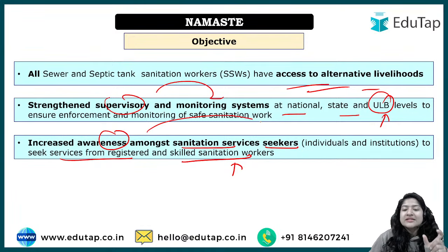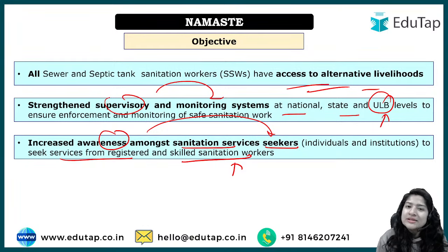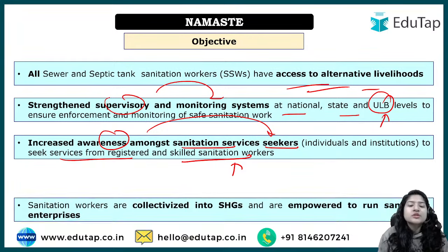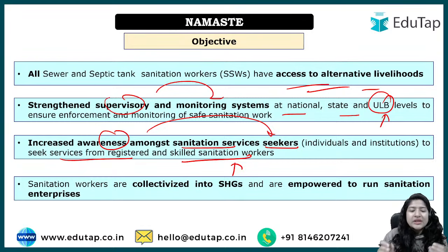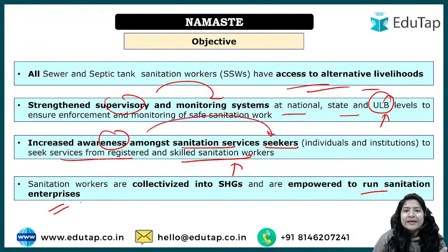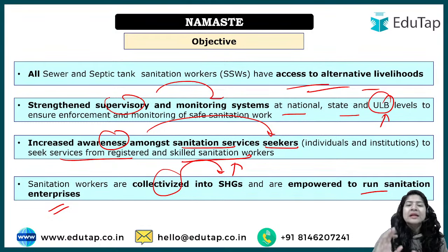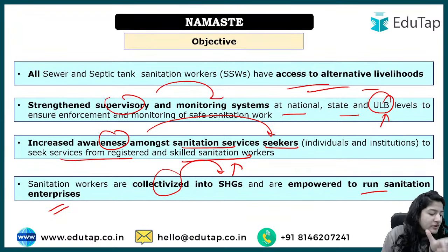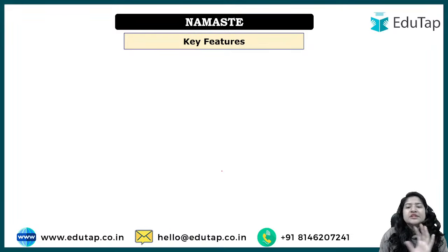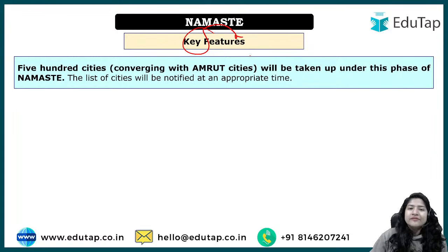By creating awareness among service seekers who demand that only properly equipped and skilled sanitation workers be employed, service providers are forced to meet those conditions. Regarding alternatives — since these workers understand sanitation well — they can even run sanitation enterprises. They can be collectivized into Self-Help Groups (SHGs), which are groups of people from similar financial backgrounds working collectively toward a better goal. SHGs will be formed for sanitation workers as well.